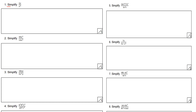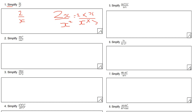Question one: simplify 2x all over x squared. I can divide top and bottom by x to get 2 over x. The reason is that 2x means 2 times x on the top, and x squared means x times x on the bottom. Since x is common to both as a product, I can cancel it. You must have a product — not a sum like 2 plus x — to simplify.